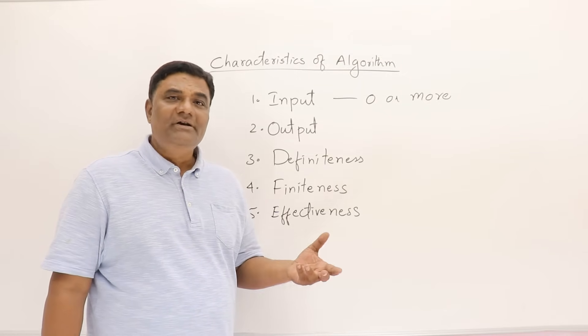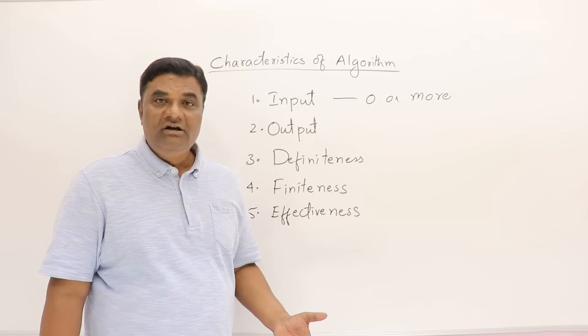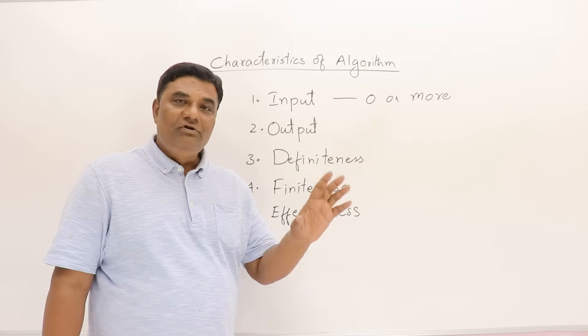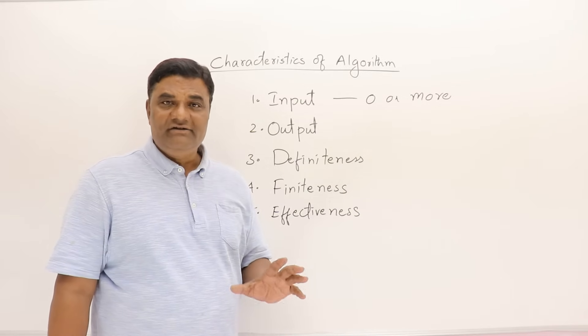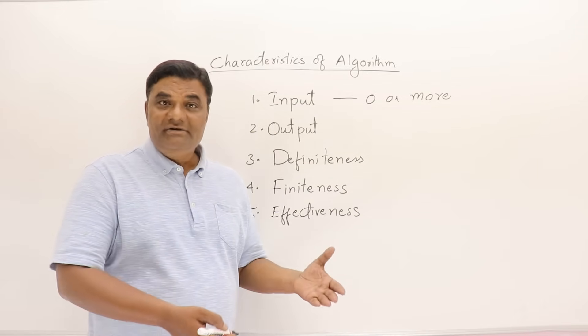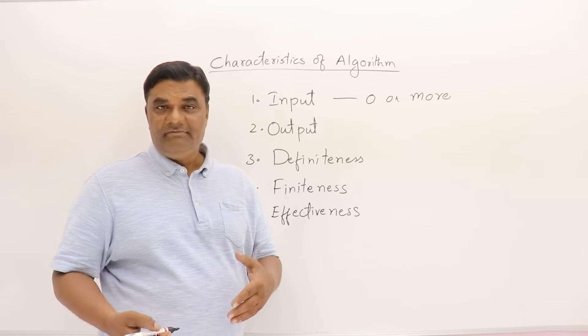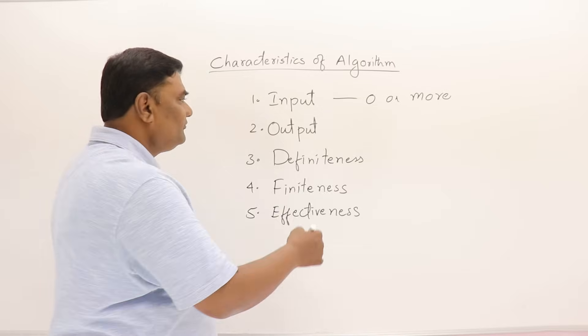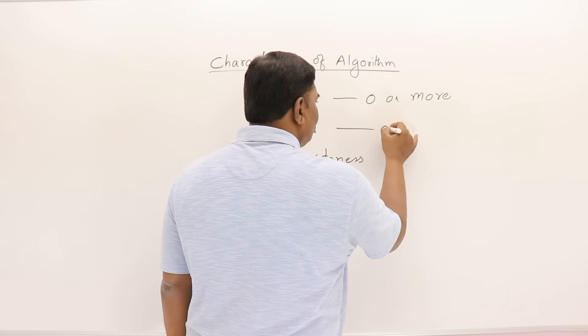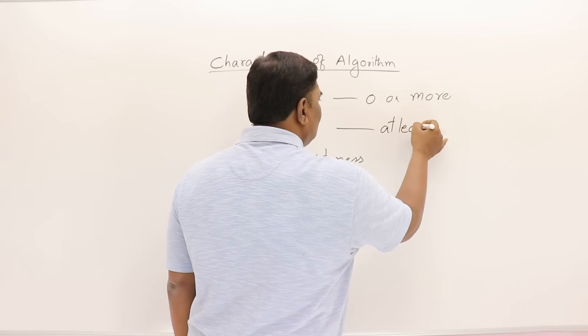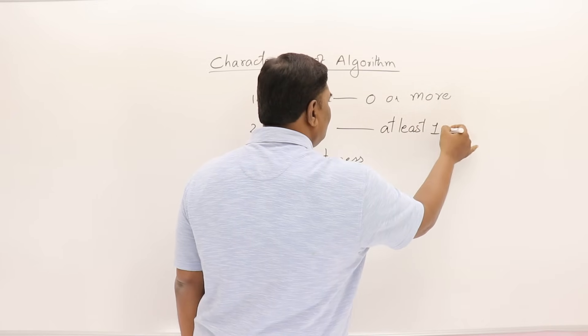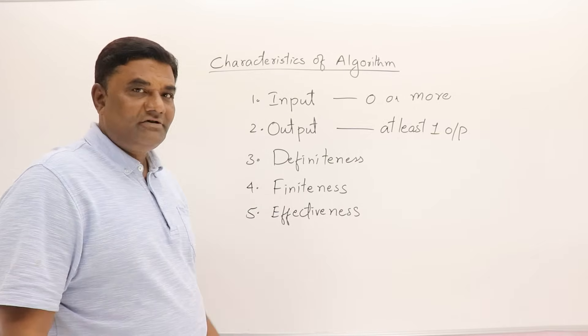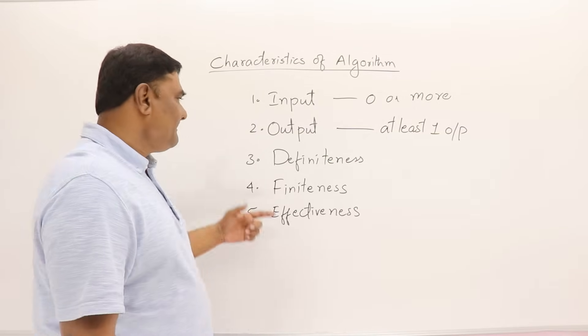When you call a function, the function may not take any parameters, but the function returns something. If it's not returning, we say void, but it does something definitely. The function gives some result definitely. That's what is the output—at least one output.